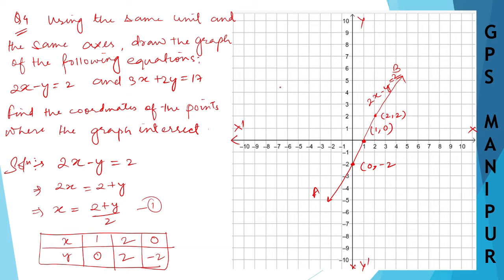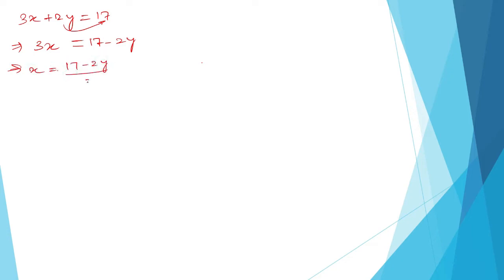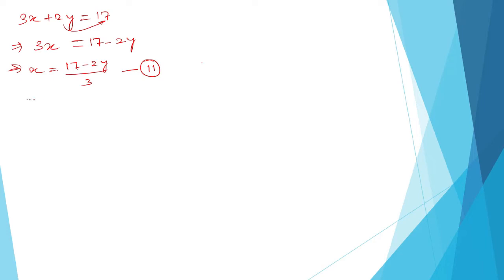Now let me take the next equation: 3x plus 2y equals 17. Transferring 2y to the other side gives 17 minus 2y, so x equals (17 minus 2y) divided by 3. This is equation number 2. Let me now draw the table for this equation.